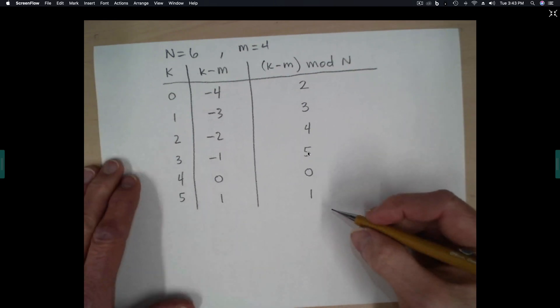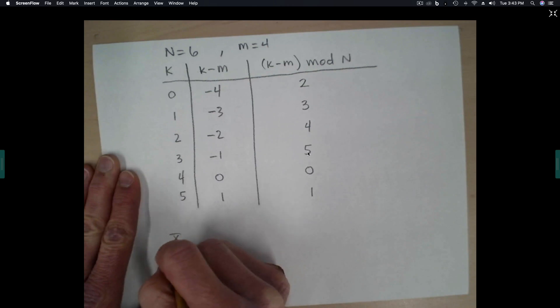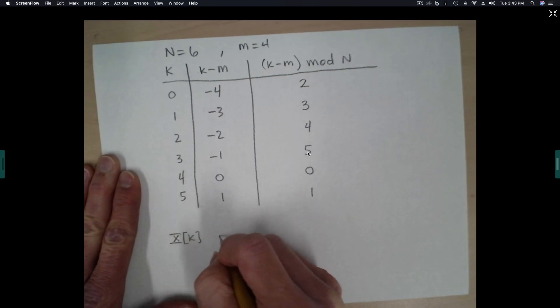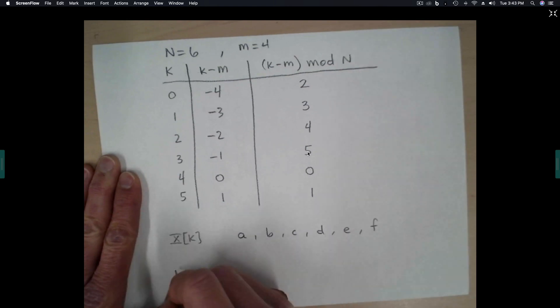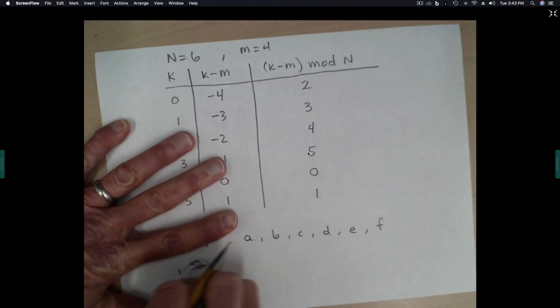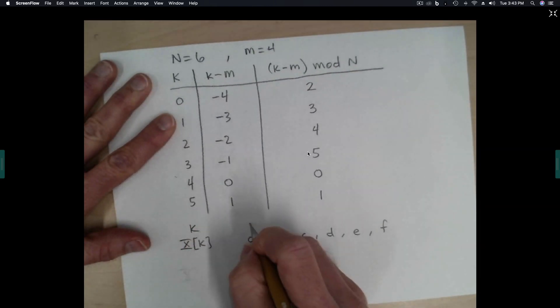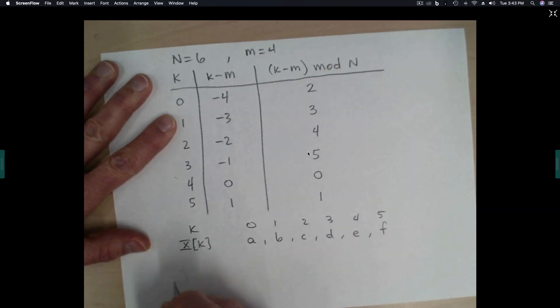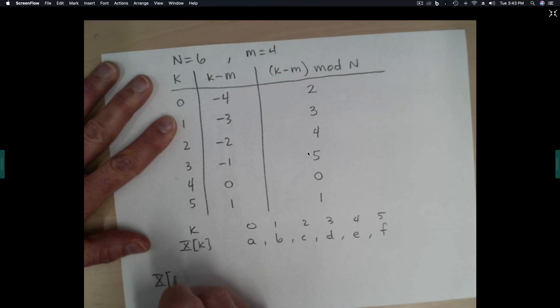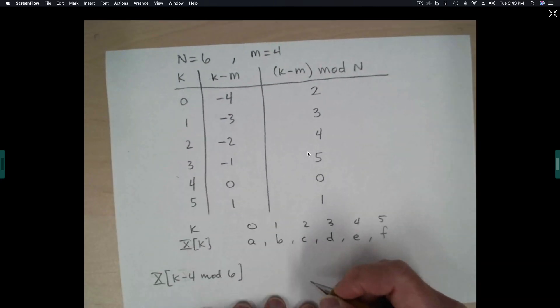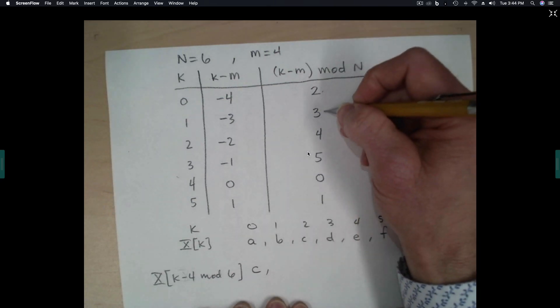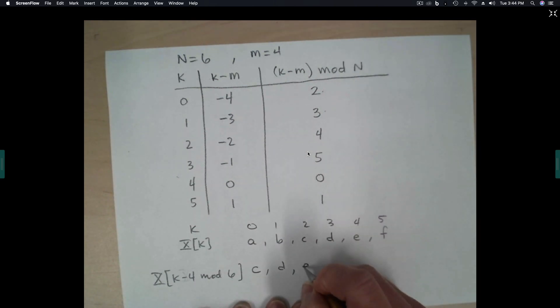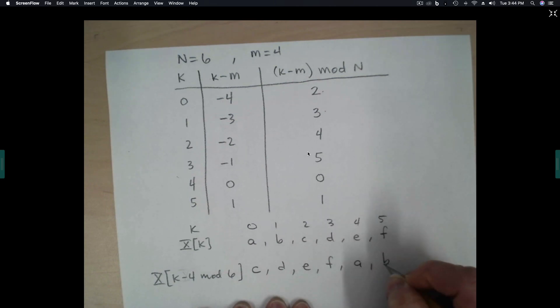So notice what happened. If we do a circular shift, let's suppose we have a sequence x, or let's do this in the frequency domain, x of k. Let's suppose that that sequence is a, b, c, d, e, and f. If we do, so then this will be k equals 0, 1, 2, 3, 4, 5. If we draw a picture of k minus 4 mod 6, the first sample is going to be the 2 index. So that will be c. And then we'll have the 3 index, d, 4, e, f, a, and b. Okay, so let's just see if this works out.